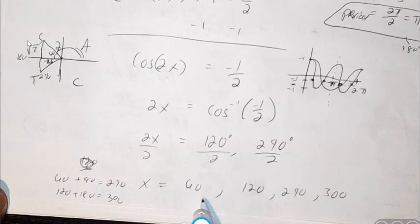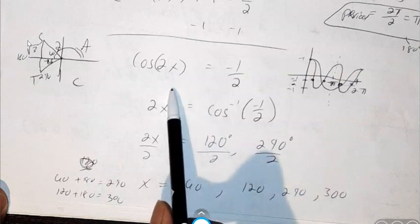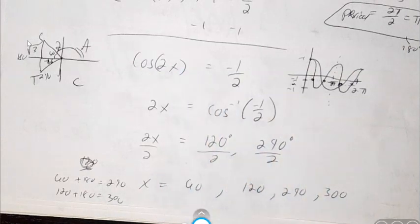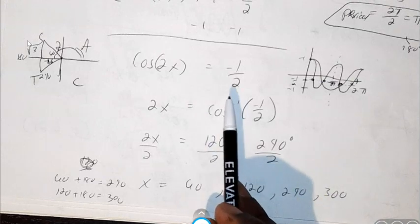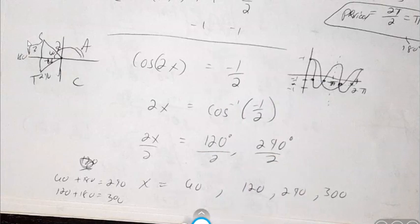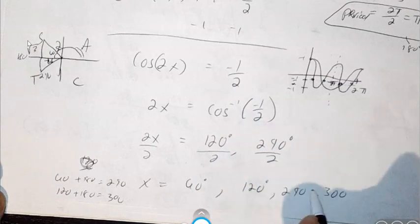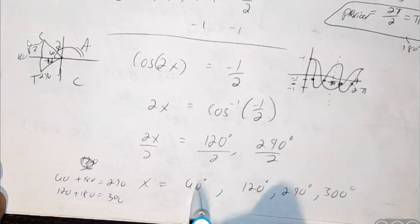So if I check that out, if I plug in 60 or 120 or 240 or 300 into that angle, I should get the output of one half or negative 0.5. I just plugged it into my calculator to make sure I was right before I did this video. All these angle measurements do give me an output by plugging X.